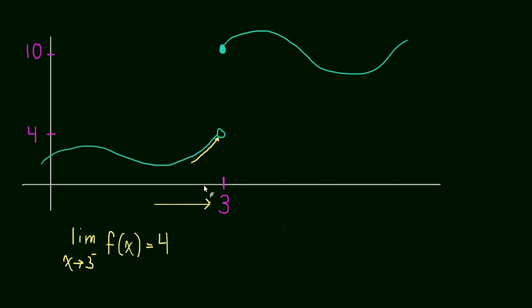So the limit just from one side, you just look at what the function is approaching as you're moving closer and closer to 3 from just that one side, or whatever number you're given. In this case, it's 3.